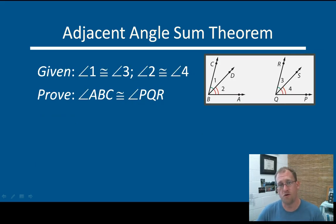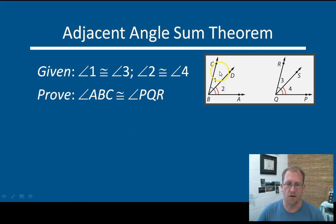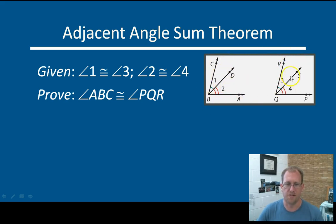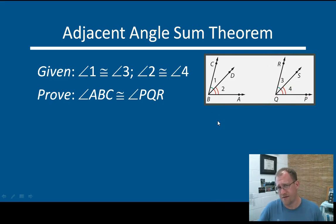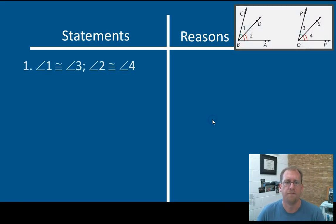We'll do plenty of examples with that, and here's one for you right now. We're going to be looking at these two angles. Angle 1 is congruent to angle 3, and angle 2 is congruent to angle 4. They're giving us the congruencies here, and they want us to prove that angle ABC is congruent to angle PQR. So we're proving this theorem right now. Let's look at how you would do that.